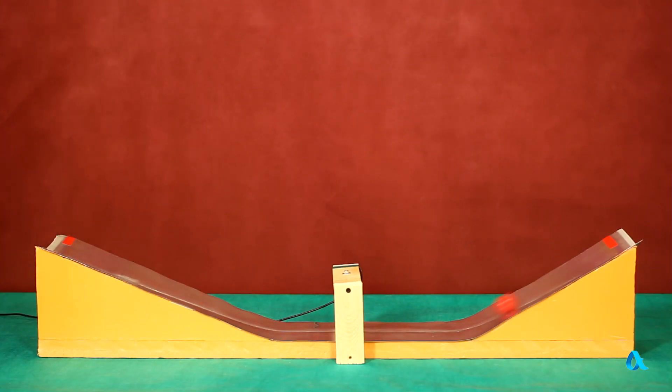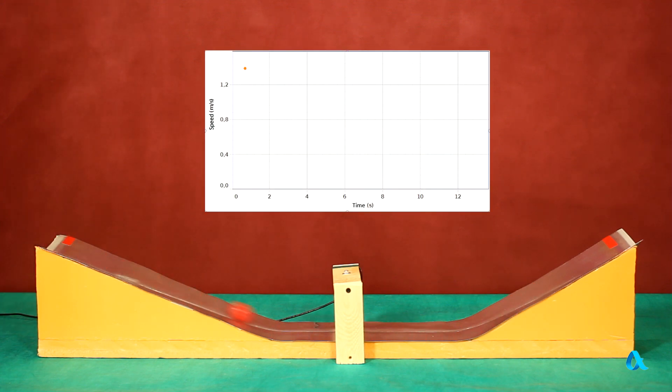But in reality there are always some losses. The ball loses height with every round and the speed at each run becomes a little lower. Let's register the decrease in the speed of the ball going through the photogate on the graph. We can see that speed loss is nearly uniform.